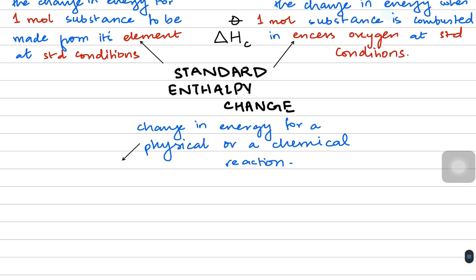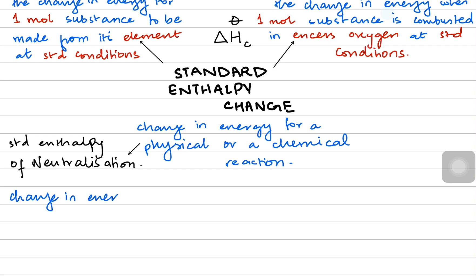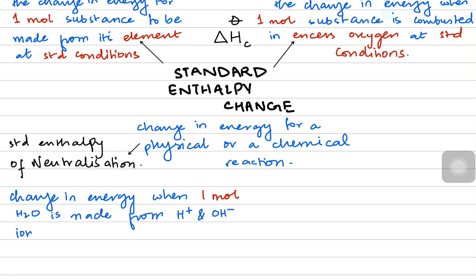Next is standard enthalpy of neutralization. When we talk about neutralization, it is the change in energy when one mole of water is made from H⁺ and OH⁻ ions at standard conditions. So you are taking one mole H⁺ and one mole OH⁻ ions to make one mole of water at standard conditions. We write it with delta H, the symbol for standard conditions, and then neutralization.